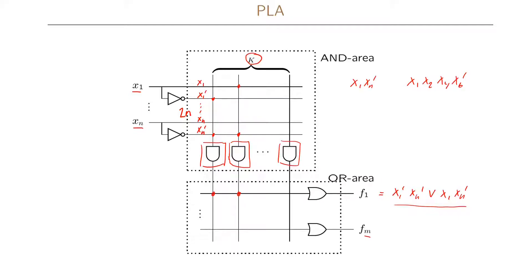It is important to minimize functions as much as possible because the number of AND gates is not infinite — we need to use as few AND gates as possible in order to fit our functions into the PLA. A typical example of a PLA might have N=16 inputs, K=48 AND gates, and M=8 outputs. This means we can use on average 48 divided by 8, which equals 6 implicants per function — not very many when we have 16 variables.